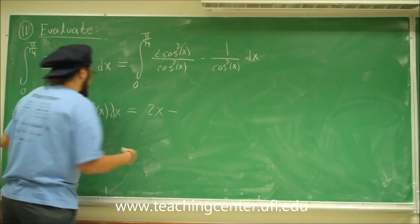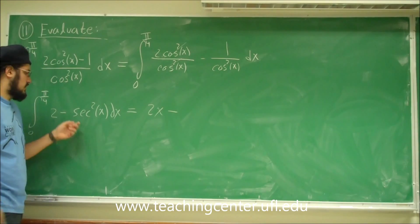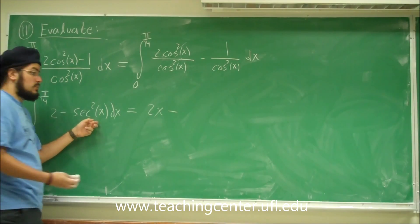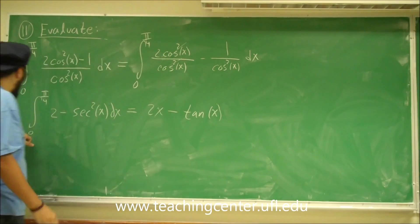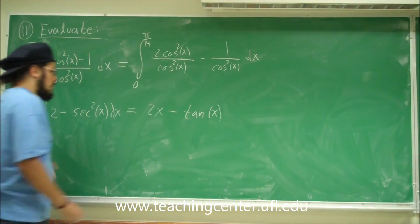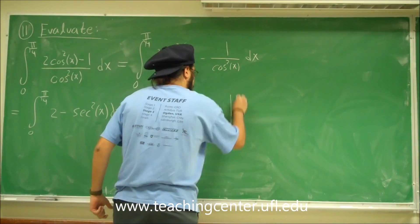Minus. Now find a function when you take the derivative of that function, you get secant squared. Well, that function we know is tangent of x. And that's it. But now we have to evaluate this from 0 to pi over 4.